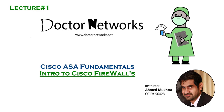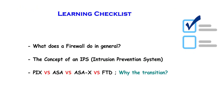Here is our learning checklist. We'll be looking at what a firewall does in general and the concept of an IPS. Then we'll cover the in-demand topic: PIX versus ASA versus ASA X versus FTD — and the question of why Cisco changed these series, from PIX to ASA, from ASA X to FTD, and why that transition happened in the first place.